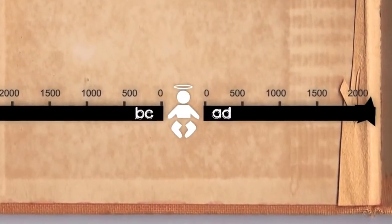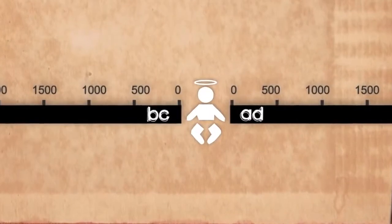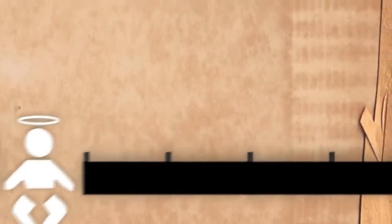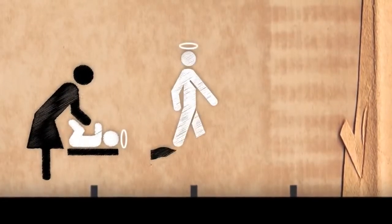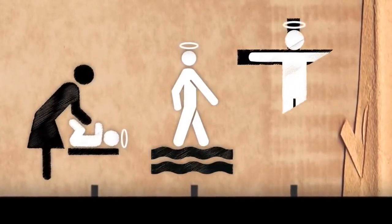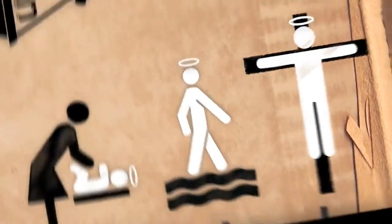Our modern calendar splits time at the approximate date of the birth of Jesus, who Christians believe is the promised Messiah. According to the New Testament, Jesus is born to a virgin named Mary, lives a sinless life, and then willingly sacrifices himself as the substitutionary atonement for the sins of mankind.